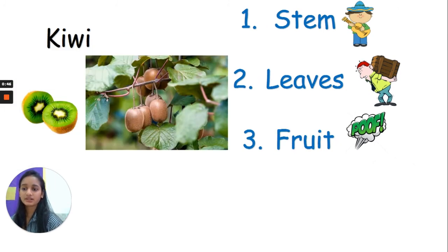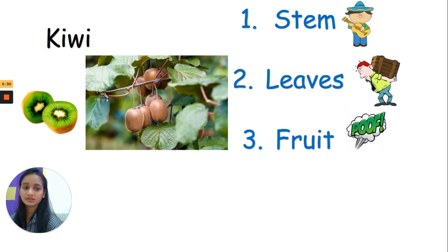The next one is the kiwi. Think about it — is it one, stem; two, leaves; or three, fruit? One, two, three. If you disappear, that's correct — it is the fruit of a plant. The kiwi is a fruit.